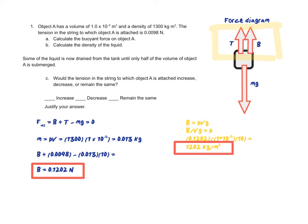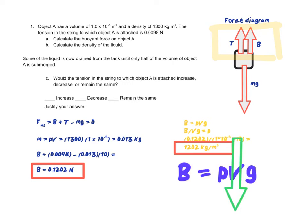Next it says that some of the liquid is now drained from the tank until only half of the volume of object A is submerged. Would the tension in the string to which object A is attached increase, decrease, or remain the same? Justify your answer. Alright, so we think about it. If we have half the volume submerged, so if the volume decreases, the buoyant force will also decrease.